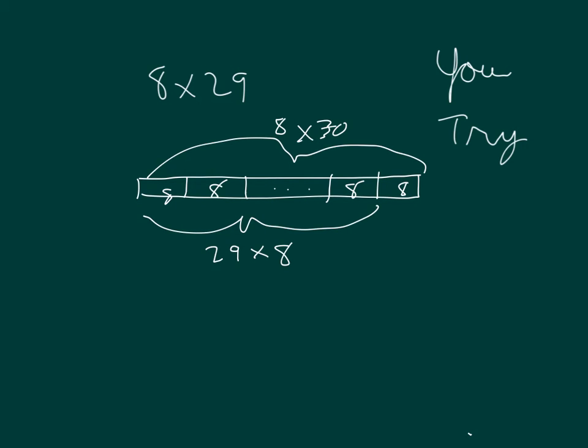8 times 30 is 240, and we would subtract 8 from that, because we're looking at 29 8s, not 30 8s.